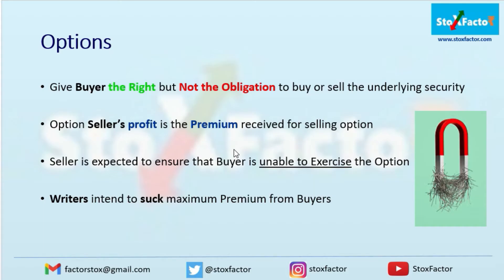Before discussing the Max Pain Theory, let us quickly look at what option contracts are. The option gives the buyer the right but not the obligation to buy or sell the underlying security. When you buy an option, you only have to pay the premium and you always have a choice to exercise if your option is in the money. The obligation is for the seller — if you want to exercise, the seller is obliged to honor that exercise at the time of expiry.